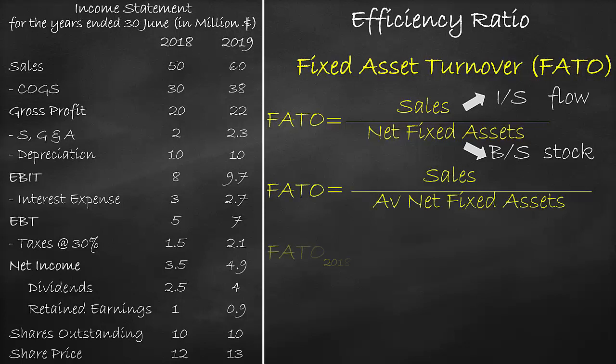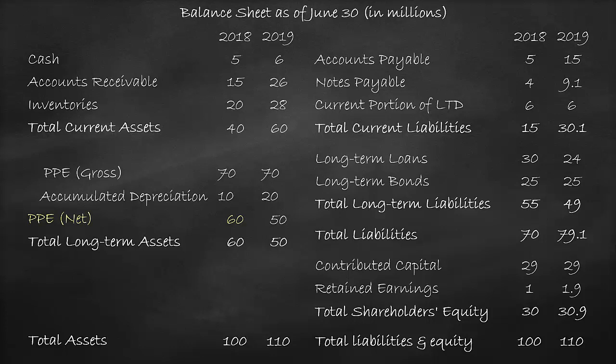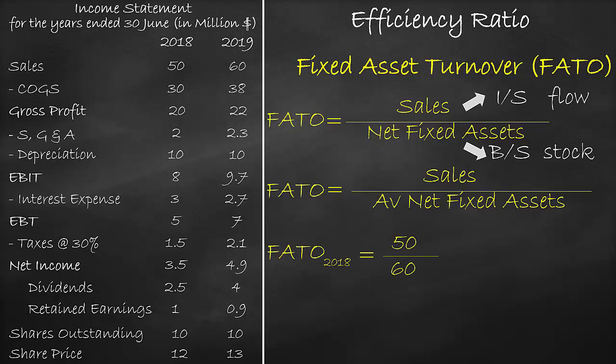Let's calculate the fixed asset turnover ratio for the year 2018. Sales is equal to $15 million. Let's look at the balance sheet for the net fixed assets. Please note that 2018 is the first year of operations; consequently, we do not have the average of the net fixed assets as we do not have the previous year. We have the net fixed assets in 2018 of $60 million, so in our formula we will divide by net fixed assets of $60 million, which is equal to 0.83 times.